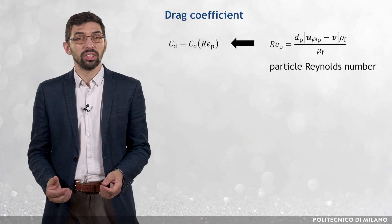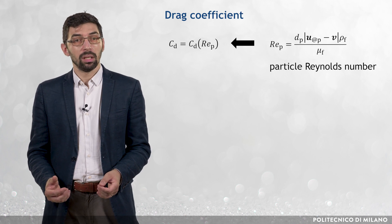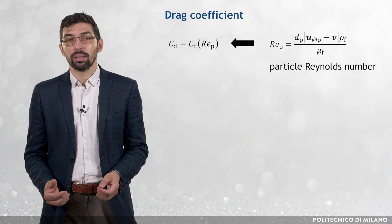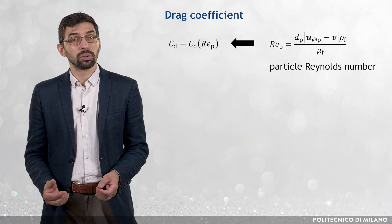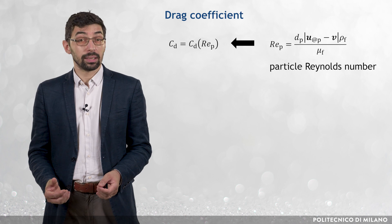The drag coefficient is primarily a function of the particle Reynolds number Rep, which is defined in terms of the particle diameter dP, the absolute value of the relative fluid particle velocity, the fluid density ρf, and the fluid viscosity μf.